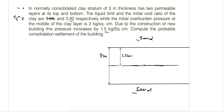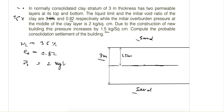Compute the probable consolidation settlement. The data given is: liquid limit = 36%, initial void ratio E0 = 0.82, initial overburden pressure sigma naught = 2 kg per cm², and increase in pressure delta sigma = 1.5 kg per cm².